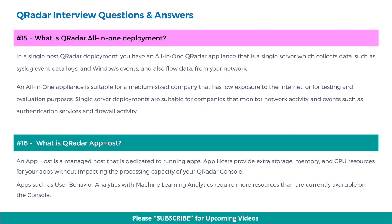Next, what is QRadar all-in-one deployment? In a single-host QRadar deployment, you have an all-in-one QRadar appliance — a single server which collects data such as syslog event data logs and Windows events, and also flow data from your network. An all-in-one appliance is suitable for a medium-sized company that has low exposure to the internet, or for testing and evaluation purposes. Single-server deployments are suitable for companies that monitor network activity and events such as authentication services and firewall activity.